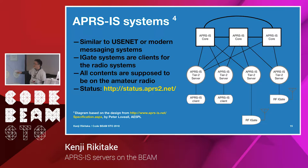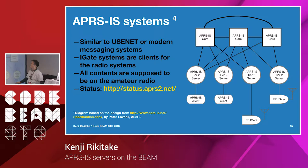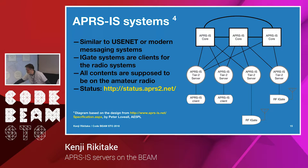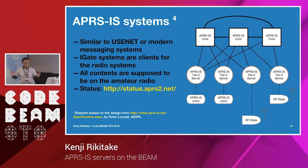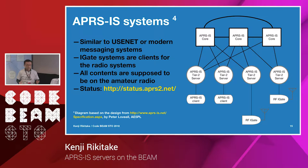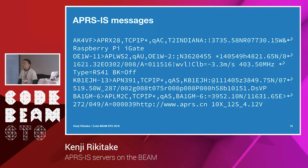This is about APRS-IS systems. This diagram resembles quite like Usenet or Twitter — a messaging system using core servers at the top. Ordinary clients or radio frequency gateways are not suggested to connect to the core because it handles a lot of traffic, so they connect to the tier-two servers. Core servers have a status page suggesting 500 to 900 kilobytes per second. The traffic fluctuates, but it's fairly large.